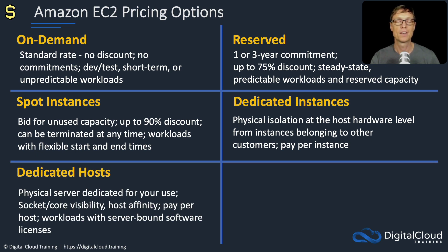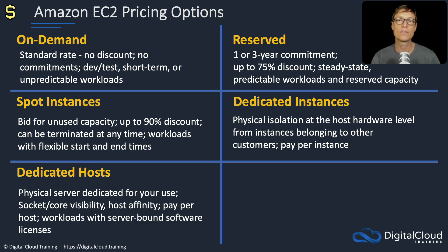We then have dedicated hosts — a physical server dedicated entirely for your use. You're not sharing it with anybody; you have a whole server just for you. It's going to cost a lot more. You might need this for things like socket and core visibility, since some licensing is bound to the CPUs in the physical hosts your instances run on. Dedicated hosts give you that visibility and help with licensing. You also have host affinity — you can control which hosts your instances run on. This model is paid per host rather than per instance, and it's the most expensive option.